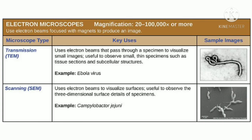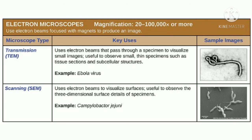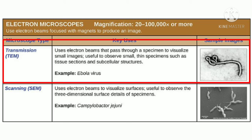The fifth type is the confocal microscope, which uses a laser beam to produce two-dimensional images. Moving on to the electron microscope: it provides magnification from 20x up to 10⁵x or even more. It uses an electron beam focused with electromagnetic lenses to produce an image. The first subtype is the transmission electron microscope (TEM), which uses an electron beam that passes through a specimen to visualize small objects and cell structures.